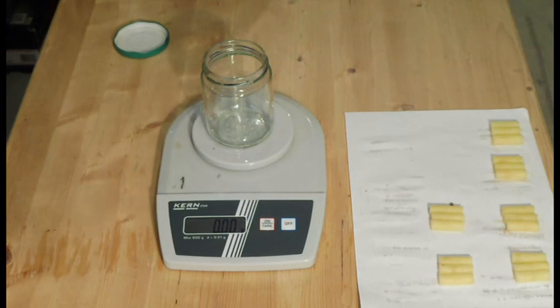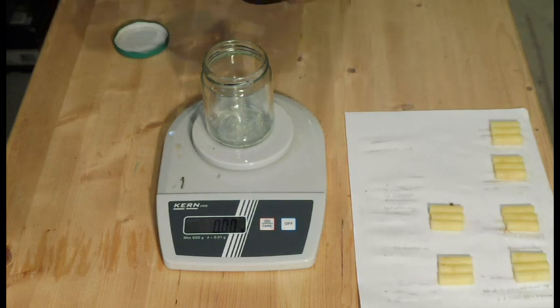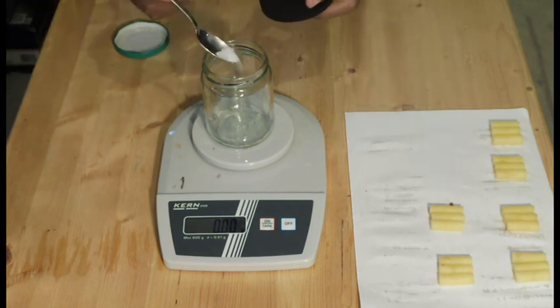We want to weigh one gram, two grams, three grams, four grams, and finally five grams. One of the jars should not have salt. This will be our zero gram salt jar.